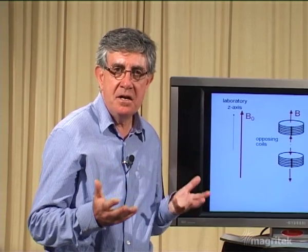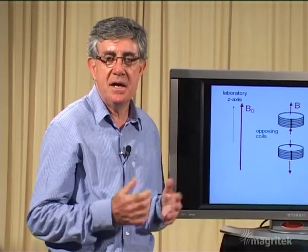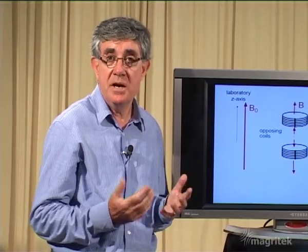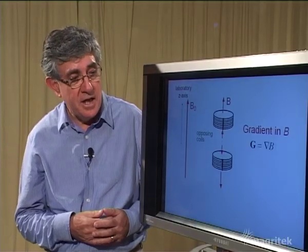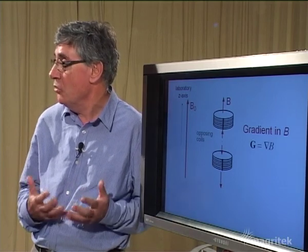So let's now extend our ideas of reciprocal space or k-space into two or three dimensions. We're going to need gradient coils to do that. We'll need more than one gradient coil, we're going to need two or three.